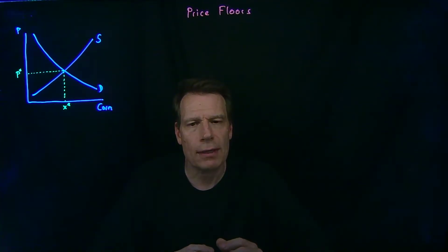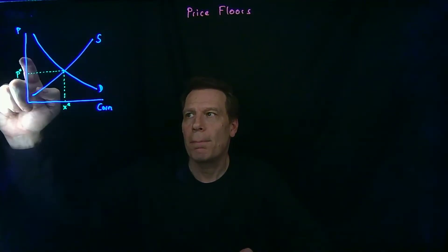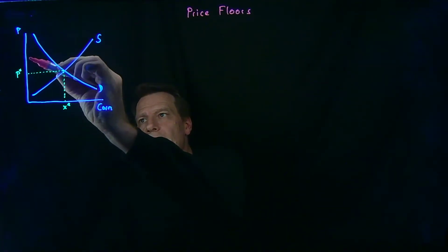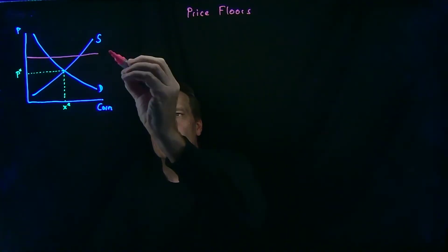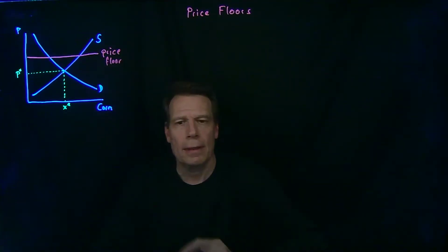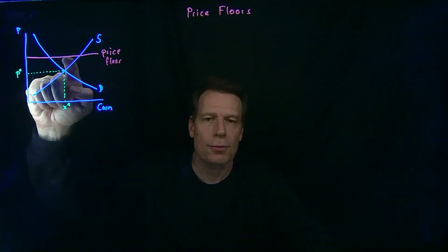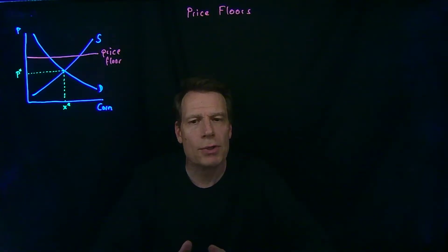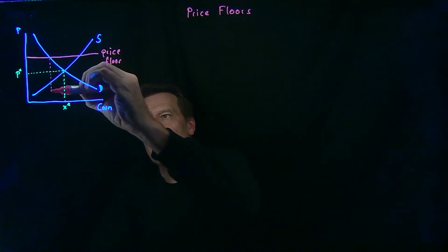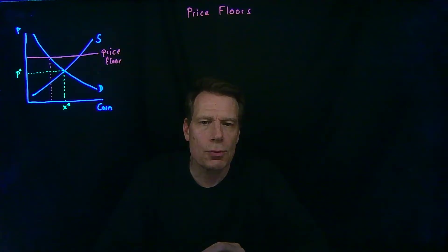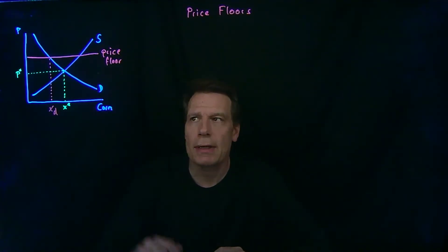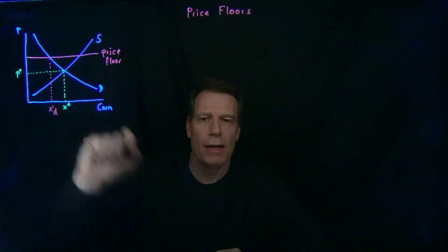In order for a price floor to have an effect, it has to be set above the market equilibrium price. Suppose the government sets a price floor here — prices aren't allowed to drop below that. We can read off the demand curve how much corn consumers demand. The quantity demanded is going to shrink as we move up the demand curve as the price rises.